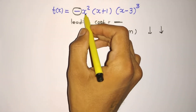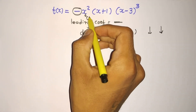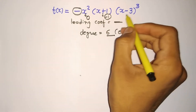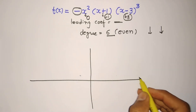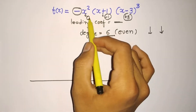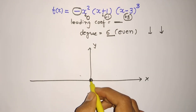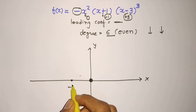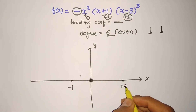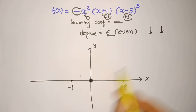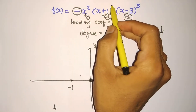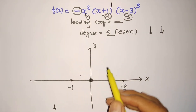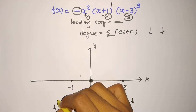Talking about the roots: from x squared you get 0, here is minus one, and here is plus three. Drawing the axes — this is x and this is y. We mark 0 here, minus one somewhere to the left, and plus three to the right. We are starting from minus one, and both ends are negative. So the graph starts from below and ends below. At minus one, multiplicity is one, so it passes like a straight line.